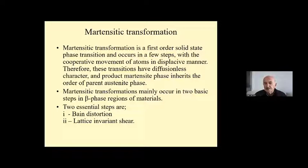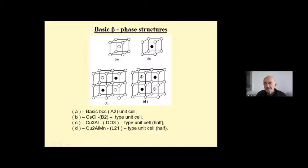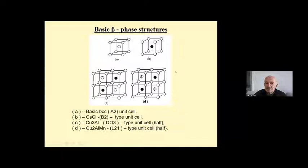Martensitic transformations are first-order solid state fast transitions that occur with the cooperative movement of atoms in a displacive manner. Therefore, these transitions have a diffusionless character and the product martensitic phase inherits the order of the parent austenitic phase. These transformations mainly occur in two basic steps: Bain distortion and lattice invariant shear. These are the basic parent phase structures observed in the parent phase region of the material: the first figure represents the ordinary body-centered cubic structure; the second represents the cesium chloride type superlattice structure; the third represents the DO3 type crystal structures; and the last figure represents the L21 type ordered phase structures.